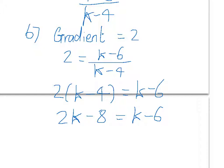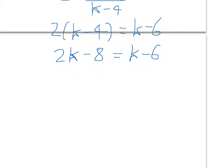This is quite an easy little equation to solve. Take away k from both sides. I'm left with 1k here, minus 8 equals minus 6. And then, add 8 to both sides. So, k is equal to 14.